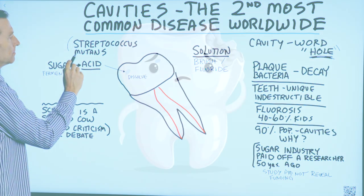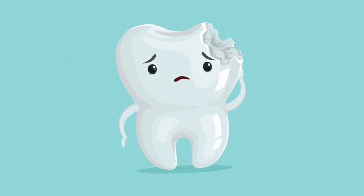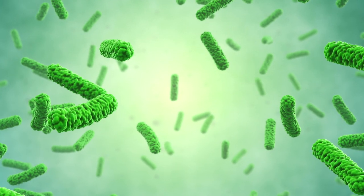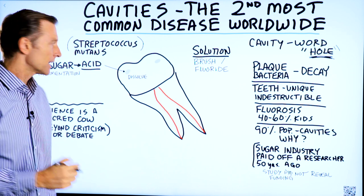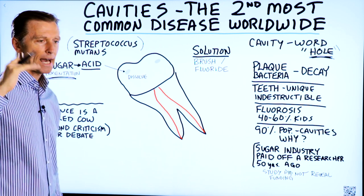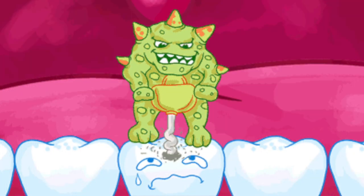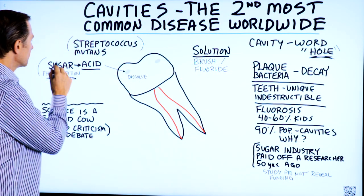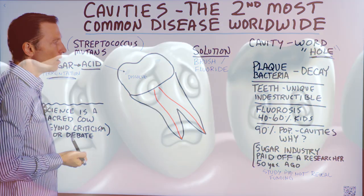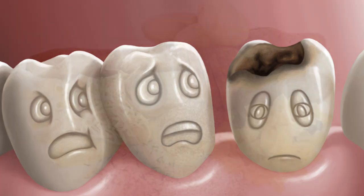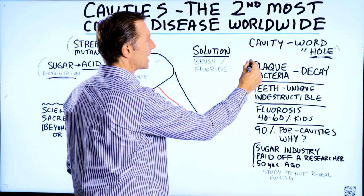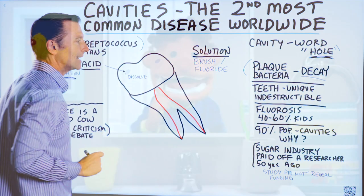Streptococcus mutans has been isolated as the main bacteria apparently causing these little holes. You have a lot of friendly bacteria living in your mouth, but as you consume sugar and other fermentable carbohydrates, the population of this bacteria starts going higher and higher until it hits a tipping point where it dominates. When it ferments sugar, it creates an acid which dissolves or demineralizes your bone, creating a hole. When you consume refined carbohydrates and sugar, you're feeding this microbe, producing plaque-forming bacteria that causes decay by creating acid.